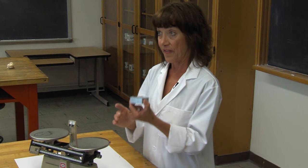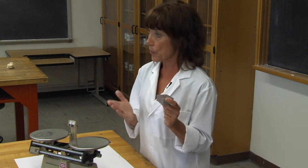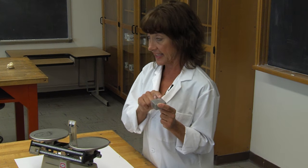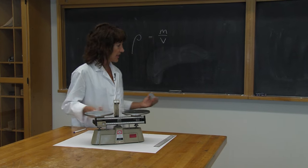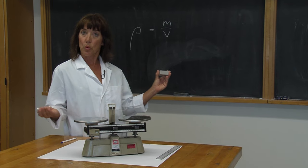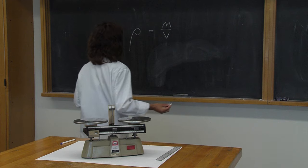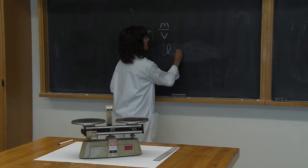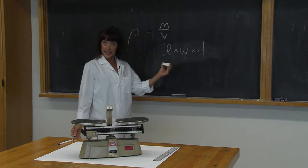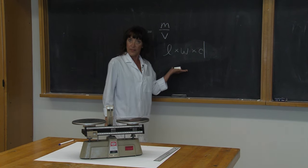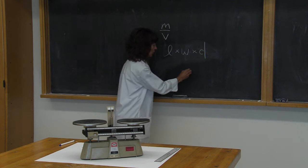To determine the volume of the block, you will need to make three measurements of the distinct sides, and we will refer to these as length, width, and depth. Once you get these measurements, you will multiply the length times the width times the depth. Our measurements will be in centimeters. Your value for volume will have units of centimeters cubed.